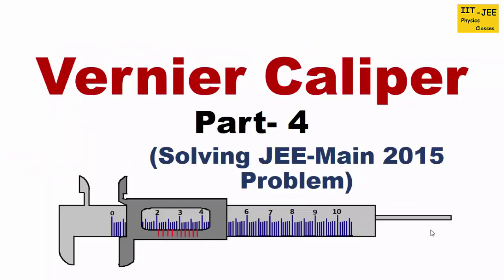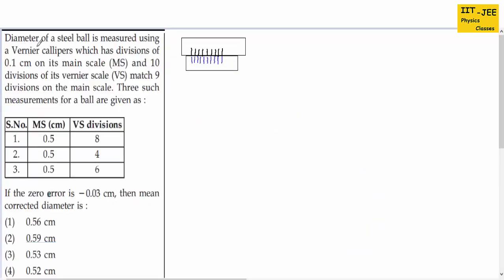Hello friends, in this video we will discuss an IIT JEE main problem which came in 2015. The problem says the diameter of a steel ball is measured using vernier calipers which has divisions of 0.1 centimeter on its main scale, and 10 divisions of its vernier scale match 9 divisions on the main scale. Three measurements are given along with a zero error, and we have to find the mean corrected diameter. Step one: we need to find the least count of this vernier calipers.